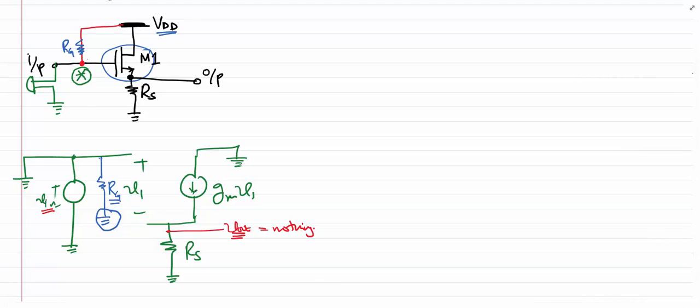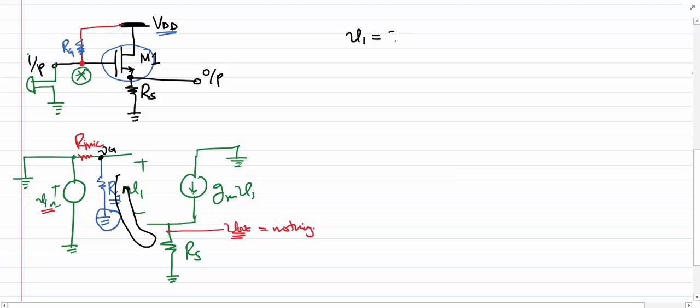I'm going to use a practical model for the mic where we have the voltage source as well as some input resistance of the mic. Let's label this node voltage as VG. Now if I apply KVL on this loop, what I'll get is that V1 equals VG minus Vout.